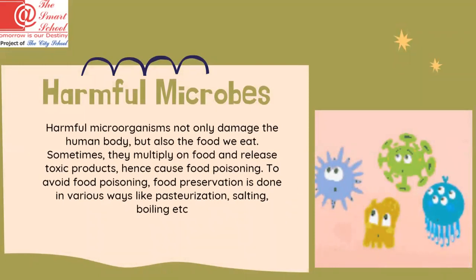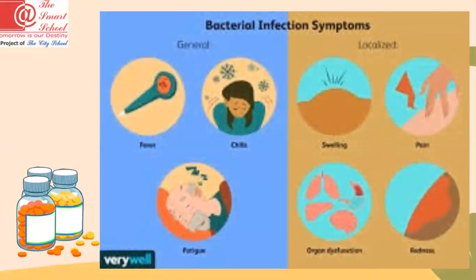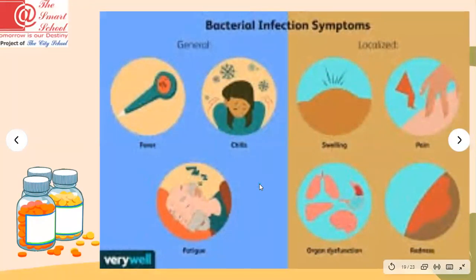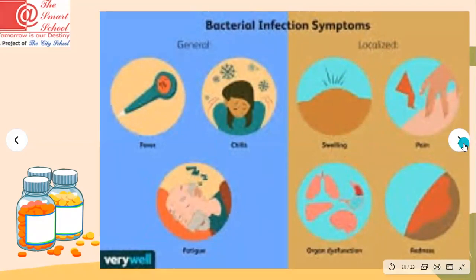As we have discussed useful microbes, now we move on to harmful microbes. Harmful microorganisms not only damage the human body but also the food we eat. Sometimes they multiply on food and release toxic products, causing food poisoning. To avoid food poisoning, food preservation is done in various ways like pasteurization, salting, and boiling. Bacterial infection symptoms include chest pain, difficulty speaking, flu, and fever. From these symptoms you can recognize if you have a bacterial infection.